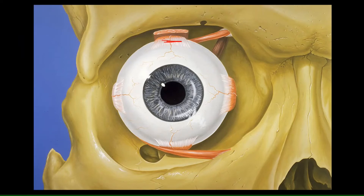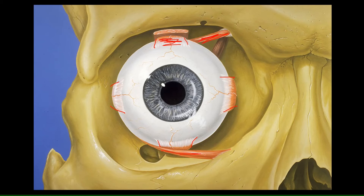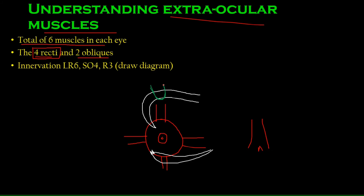In the next diagram, here are the muscles: the superior rectus, the medial rectus, the inferior rectus, the lateral rectus, the superior oblique, and the inferior oblique. I took this image from Wikipedia. This is the right eye, and their innervation is very important.